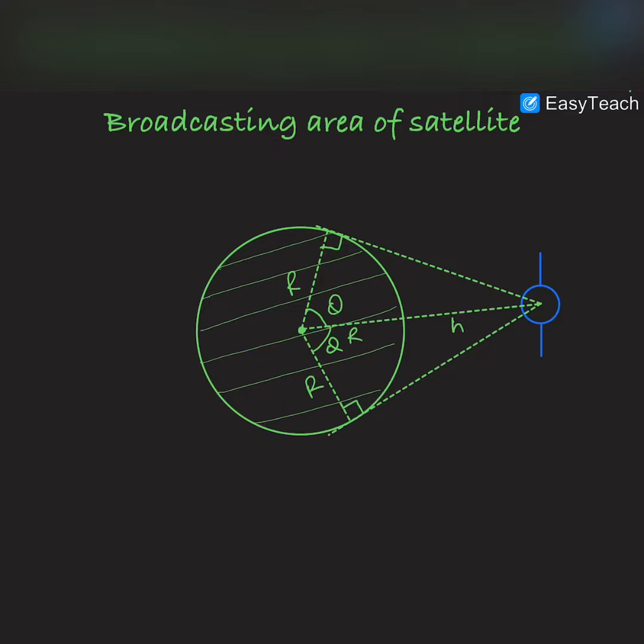In this video, we are going to discuss the broadcasting area of a satellite. You can see that this satellite is revolving around the Earth in this orbit, and at this instant of time, the area region of Earth which is illuminated with the signals is this one.